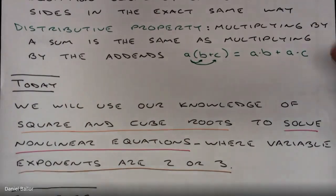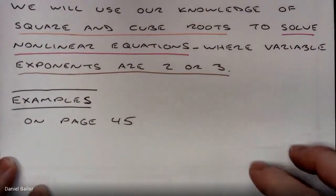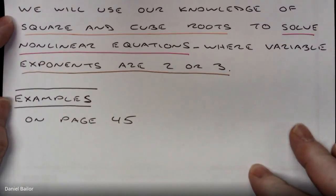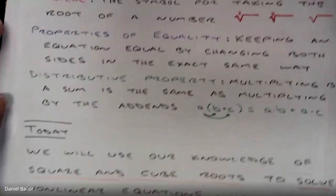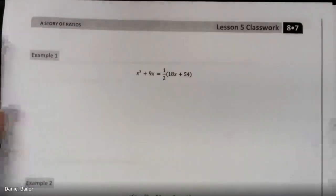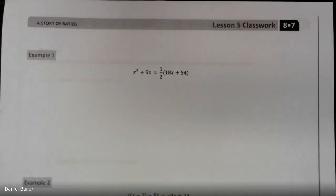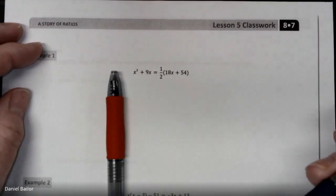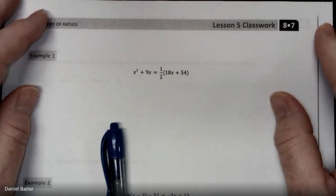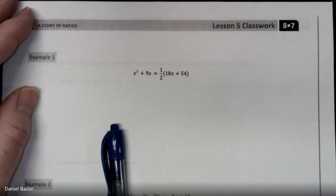Our examples start on page 45, so make sure you have your notes. I'm going to do my work in red and write down the properties I use in blue. I'd like you to write down your properties also to make sure you're thinking about how to solve this — not just solving it, but thinking about how it is solved. That's why we write our properties.